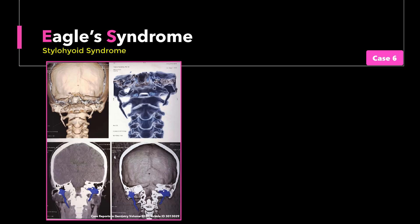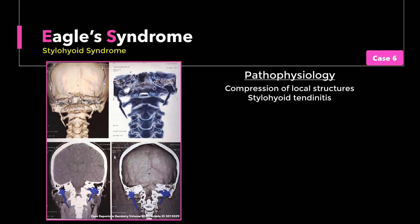The stylohyoid ligament can also undergo aberrant ossification and lead to a similar symptom complex. Of note, there are people with abnormal stylohyoid elongations who go about their daily activities without any symptoms whatsoever. These people do not have Eagle Syndrome and the elongation is simply regarded as a normal variation. We are only concerned when it is associated with symptoms, which occurs in just about 4% of such individuals. Symptoms can result from local pressure effects, tendinitis at the insertion point of the stylohyoid ligament, or fracture and osteodegenerative changes of the process itself.